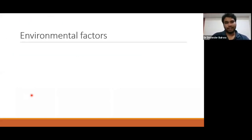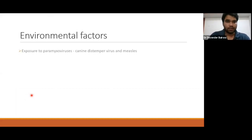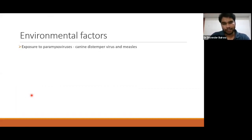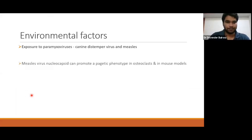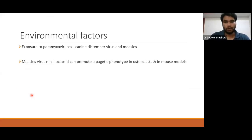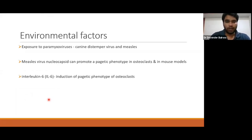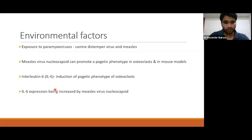Regarding environmental factors — many are implicated but none proven. Exposure to paramyxovirus, canine distemper virus, and measles has been studied. Pagetic patients have more antibodies against the nuclear capsid of measles, and measles virus nucleotides can promote a Pagetic phenotype in osteoclast mouse models. When this infection occurs, there is induction of IL-6, which leads to excess osteoclast activation. Measles virus nuclear capsid injected into mouse models shows increased IL-6 expression.